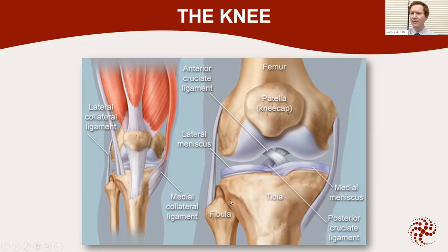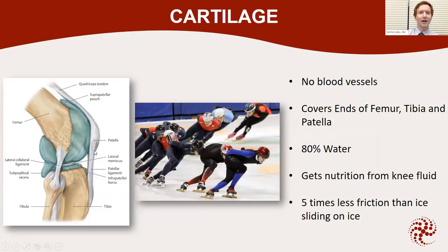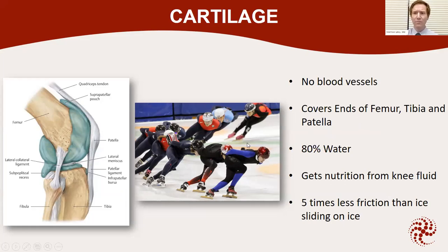We have the fibula bone, which acts as a strut on the side of the knee — not a weight-bearing bone, but it allows for attachment of ligaments and tendons around the knee. Cartilage is a pretty much frictionless surface — it's five times less friction than ice sliding on ice. It gets its nutrition from knee fluid, and that's part of the problem: it doesn't get nutrition from blood like the rest of our tissues in the body. It's mostly water, which gives a lot of support and cushion, and it covers the ends of the femur, tibia, and the kneecap — the patella.